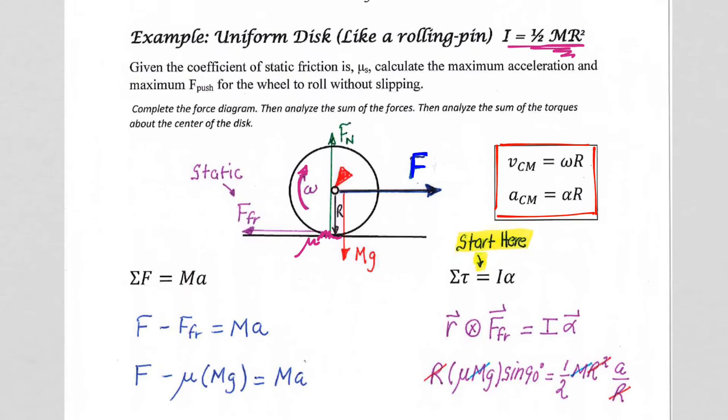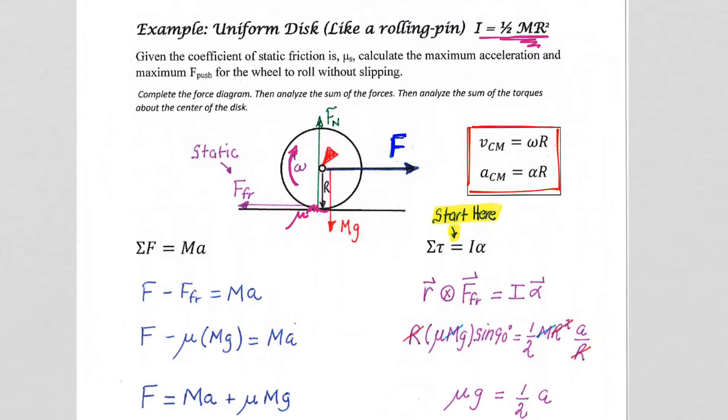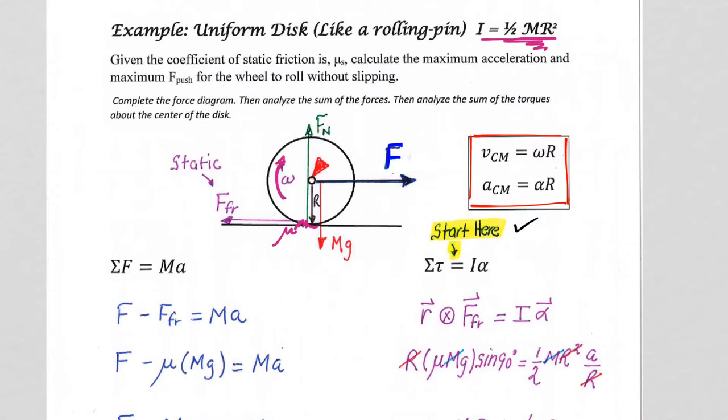Okay, so let's start where it says to start. We'll start over here with the torque. We have sum of the torques equals I alpha. We need to identify our pivot point before we calculate torque. Since this wheel is rolling about its central axis, that's the natural pivot point to choose.